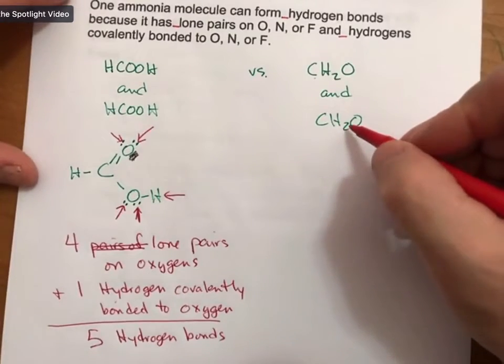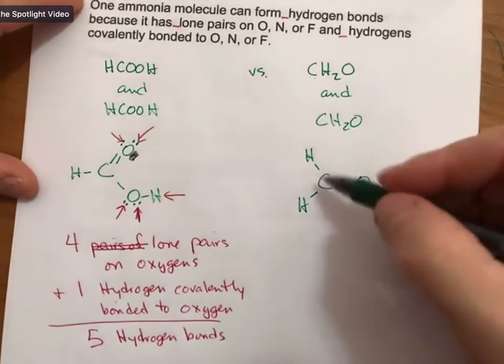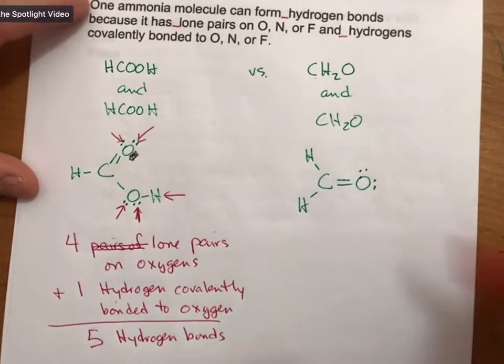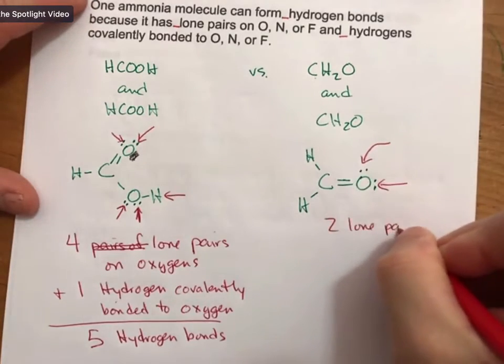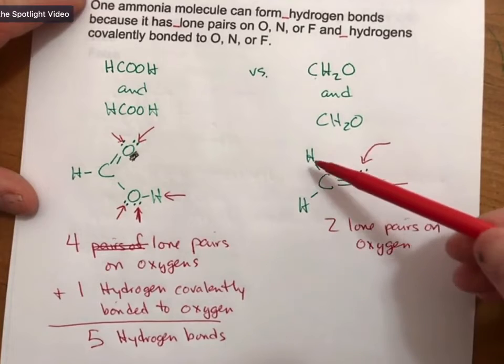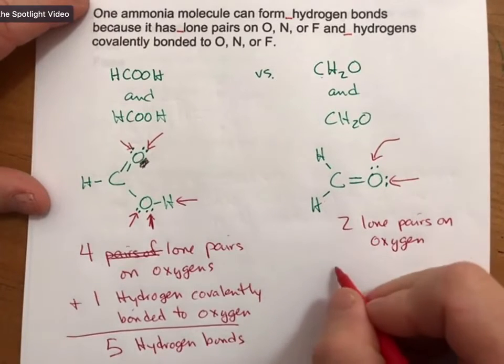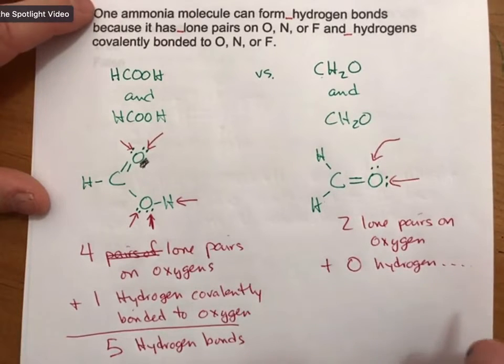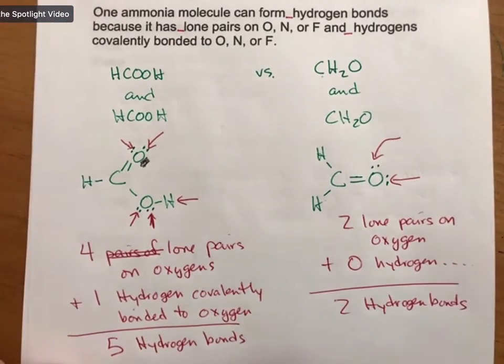Now, this molecule here has the Lewis structure CH2O with a double bond to the oxygen. The only two hydrogen bonds that it can form here are to the two lone pairs on oxygen. And there are zero hydrogens bonded to either oxygen, nitrogen, or fluorine. So no more, and so plus zero hydrogen covalently bonded to oxygen. So it can form two hydrogen bonds.